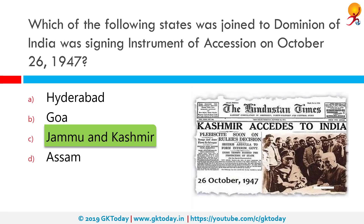Immediately, Patel's aide VB Menon arrived in Srinagar and told the Maharaja that India could take action only if Kashmir acceded to India. It is widely believed that the Maharaja wanted to keep his independence, but reluctantly acceded to India due to the grave situation created by the Pakistani invaders. Thus, on October 26, 1947, Maharaja Hari Singh signed the Instrument of Accession.